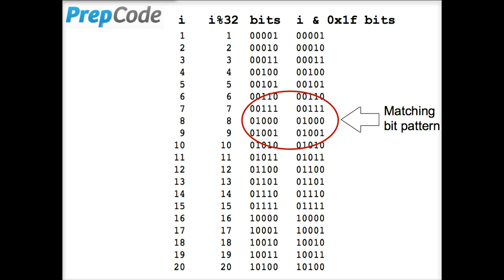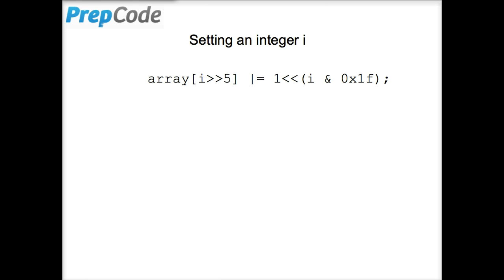Thus, setting a bit based on an integer i can be done with the following code. On the left side, we divide i by 32, and on the right, we left shift a bit into the appropriate position. Then we assign the result using a bitwise or into the bucket i divided by 32.